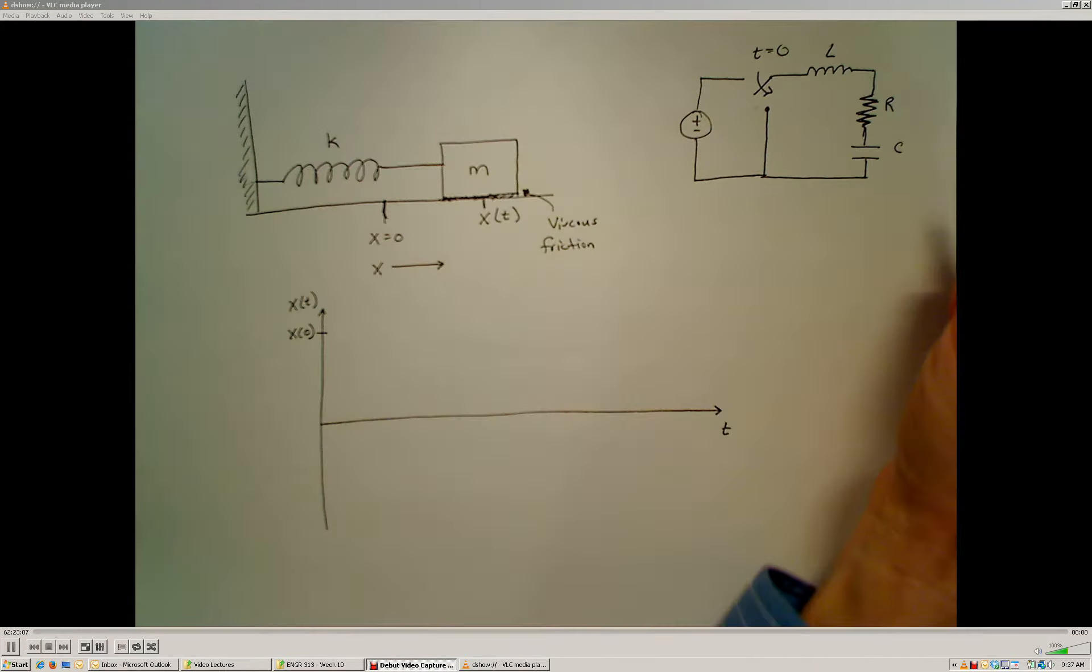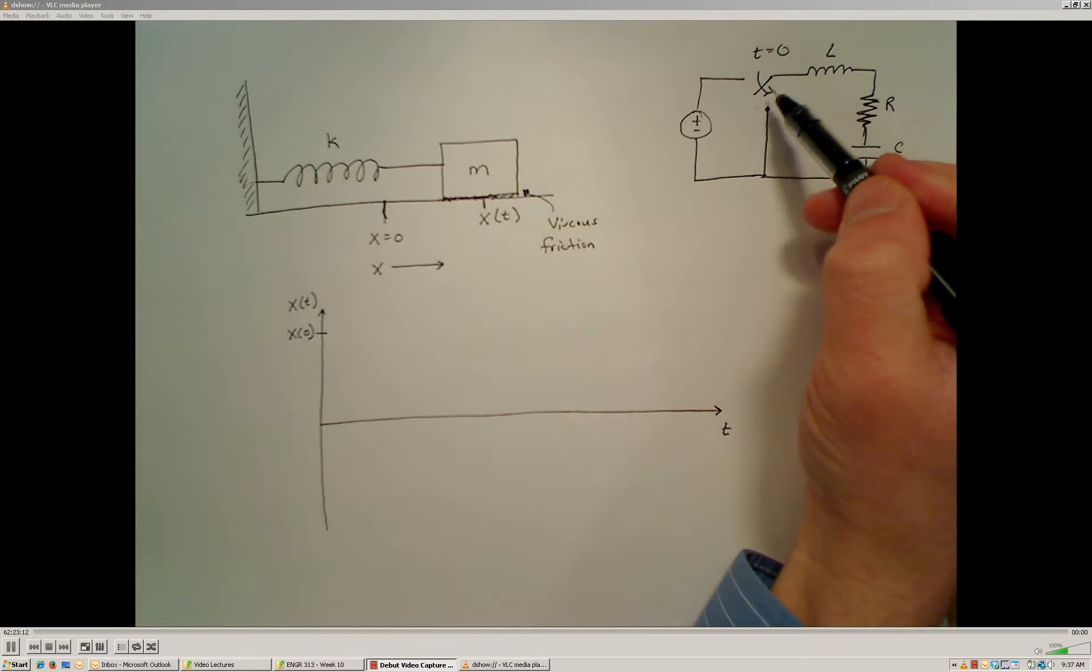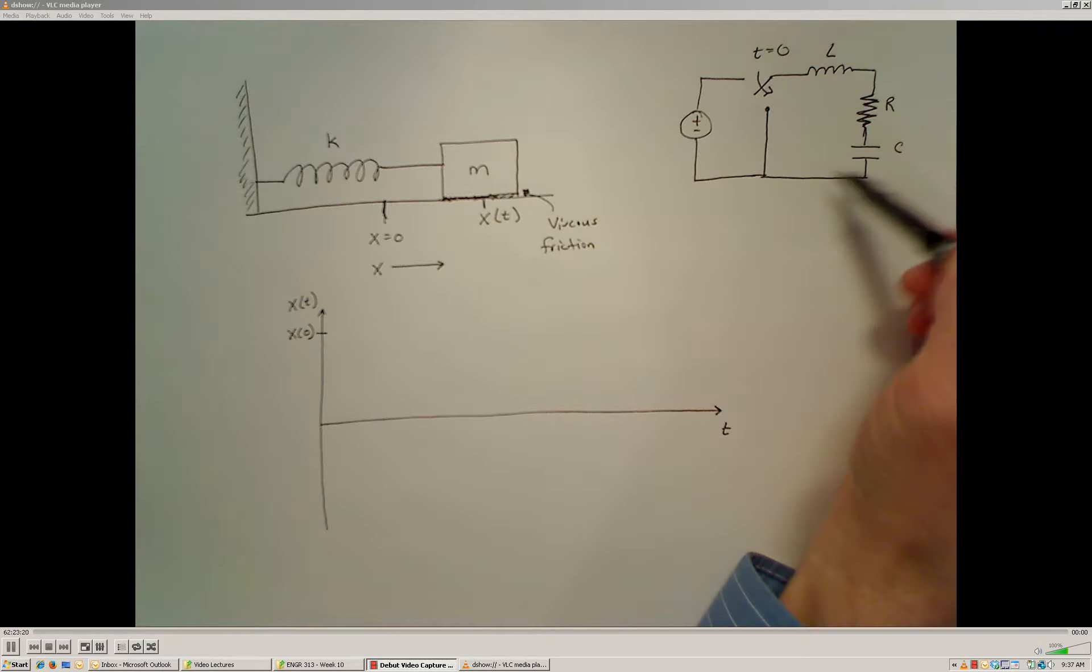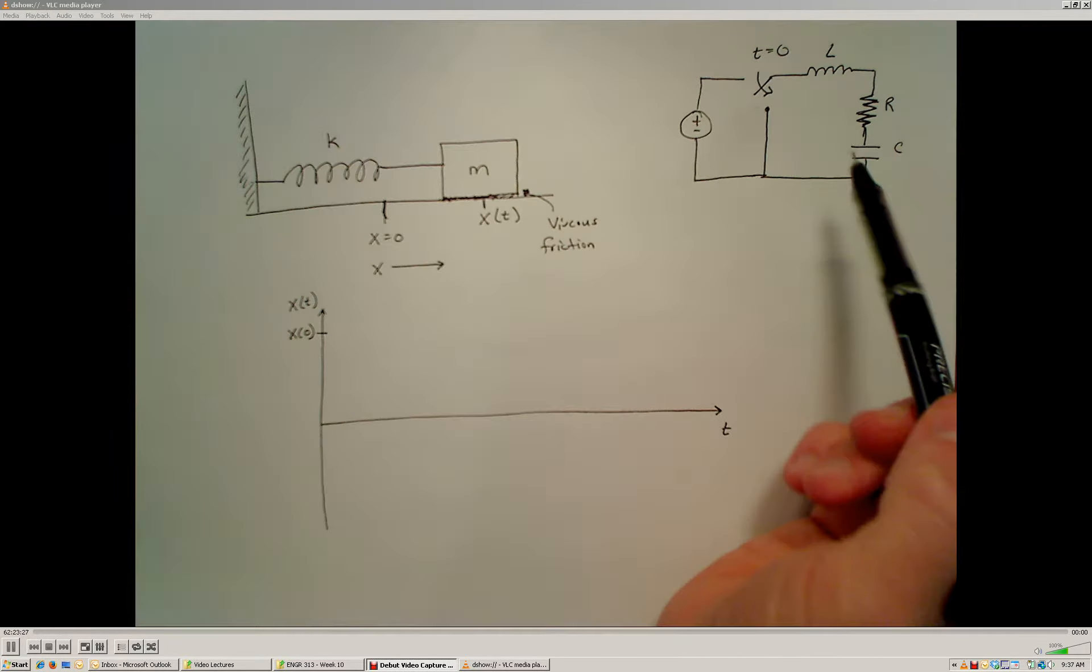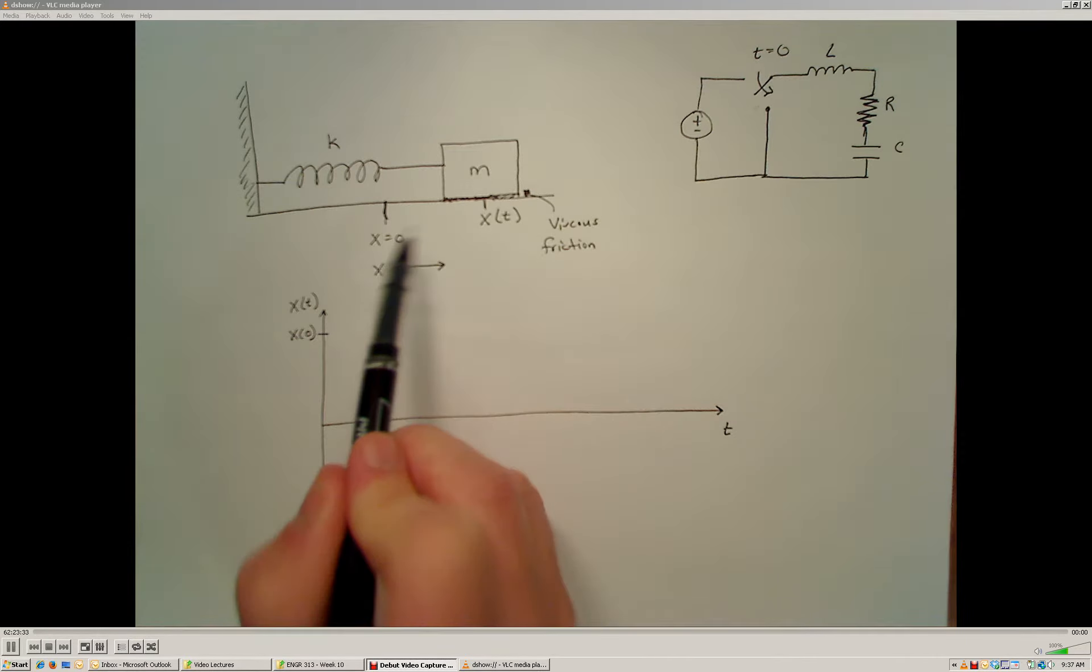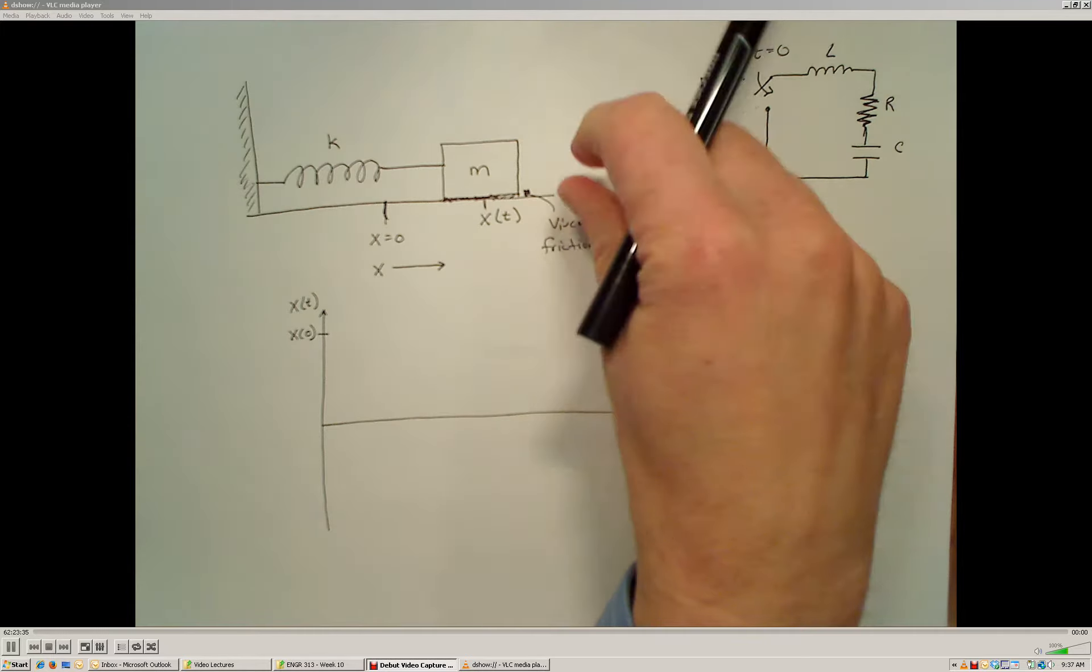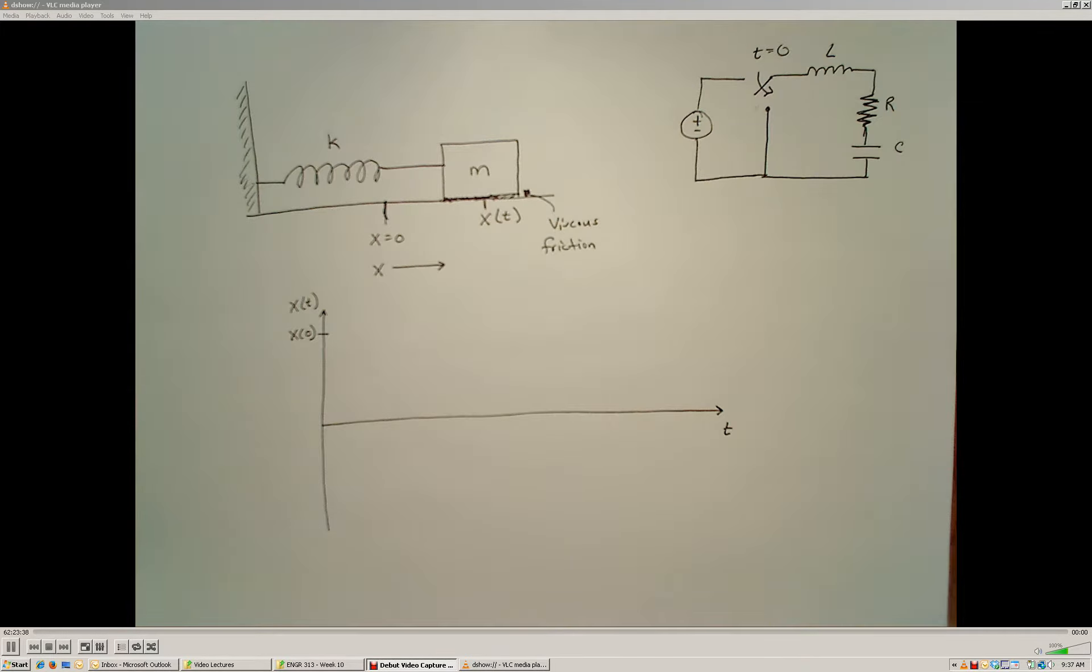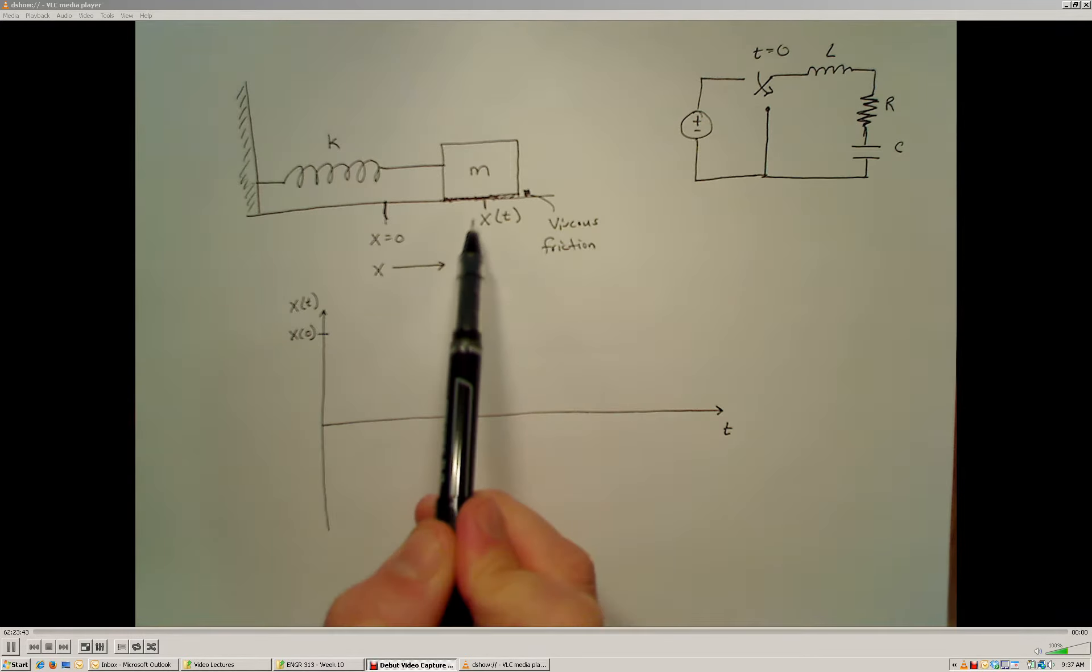This is analogous to determining what the voltage across this capacitor is going to be when I take a switch that is connected to this voltage source and I suddenly turn that voltage source off and connect just the inductor, resistor, and capacitor together. Let's go back to the mechanical system and say what happens when I release this mass from the non-zero position. How is the position going to change with time?